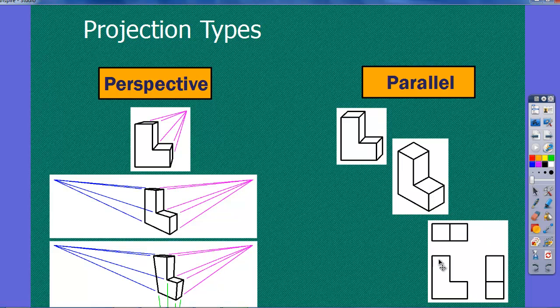And then we have what's called multi-view drawings, where instead of looking at it in a 3D representation in 2D, we're looking at each view by itself. So this view, we're looking at it from this direction, straight at this side. And then this one, we're looking straight down on top of it. This one, we're looking straight at the side.